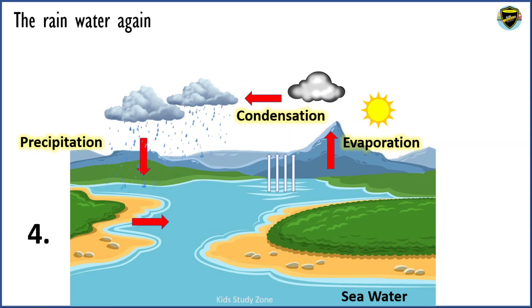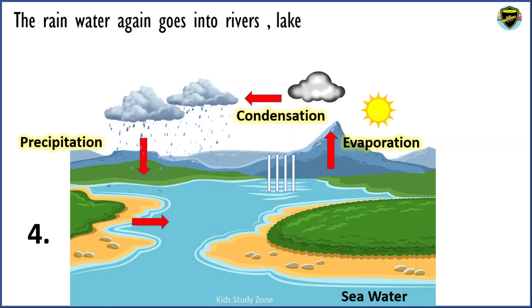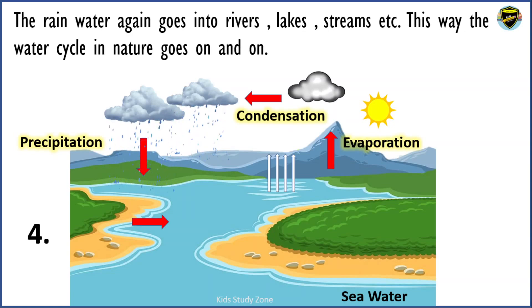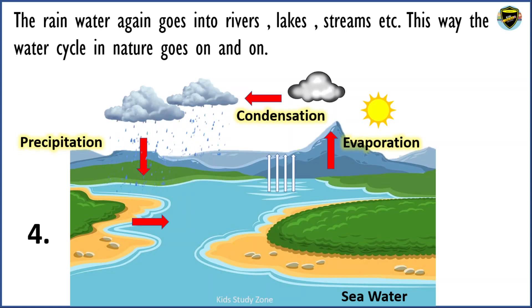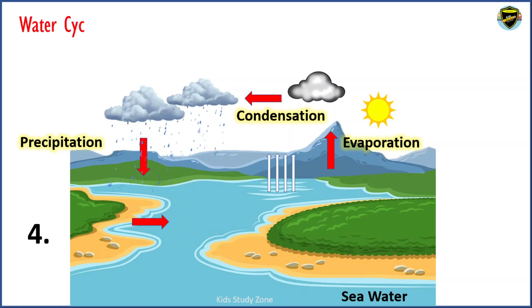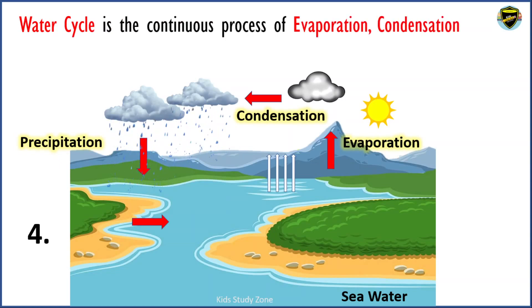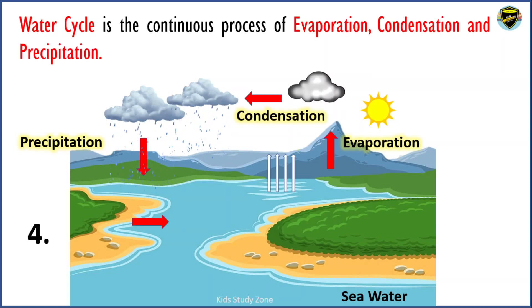The rain water again goes into the rivers, lakes, streams, etc. This way, the water cycle in nature goes on and on. The water cycle is a continuous process of evaporation, condensation and precipitation.